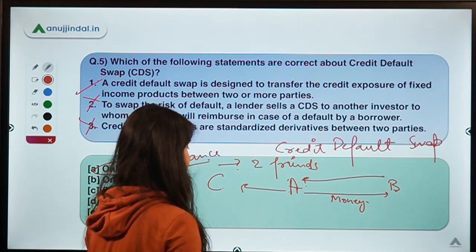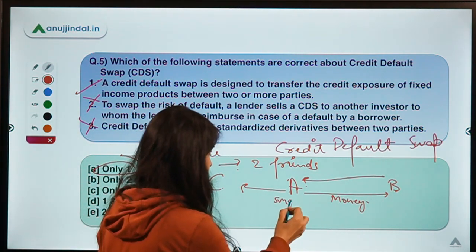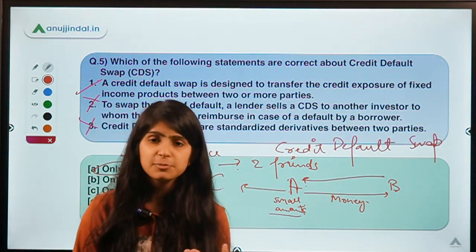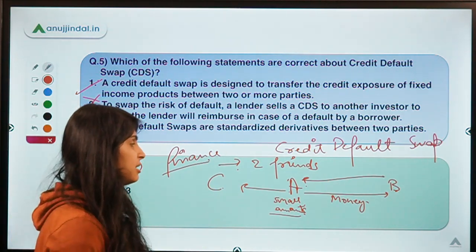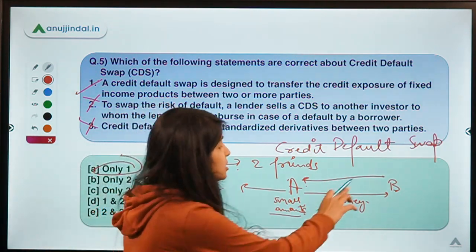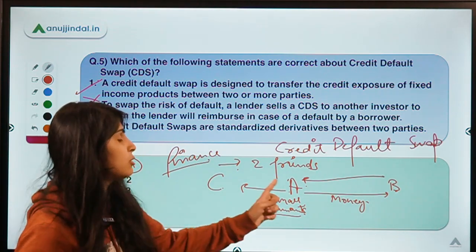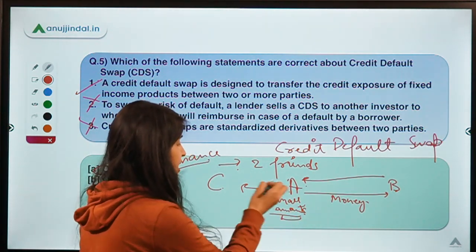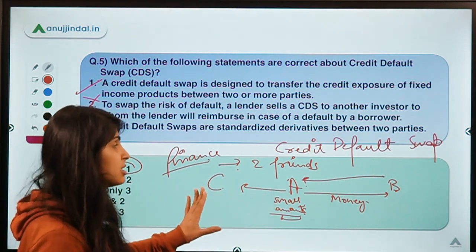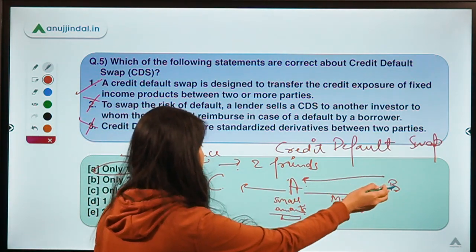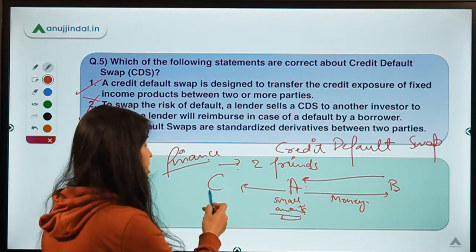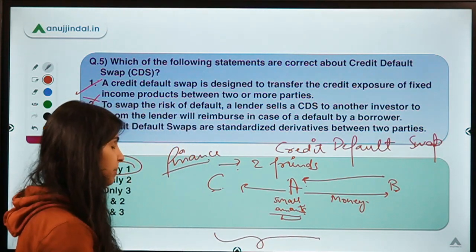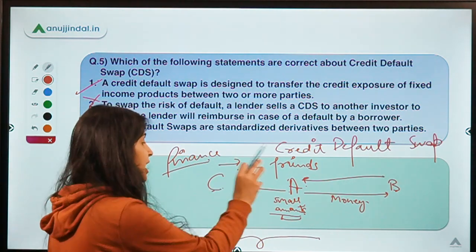A has another friend C who is a financial expert. C tells A: you pay me small amounts of money at regular intervals as an insurance premium. In return, if B defaults and does not pay A back, C will reimburse A for the entire loss, including the premium payments A had paid to C. So A, the lender, is insuring the credit risk by purchasing an insurance product from C.